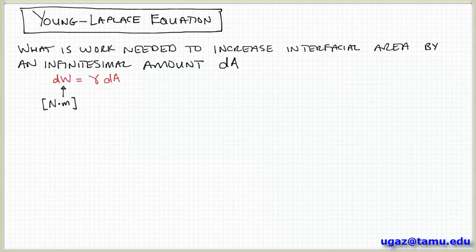So we can look at the units of this to see that it makes sense. Work is units of joules or newtons meters. Surface tension, we said, is units of newtons per meter. And area is units of meters squared. So this equation makes sense dimensionally, which is always good to know.